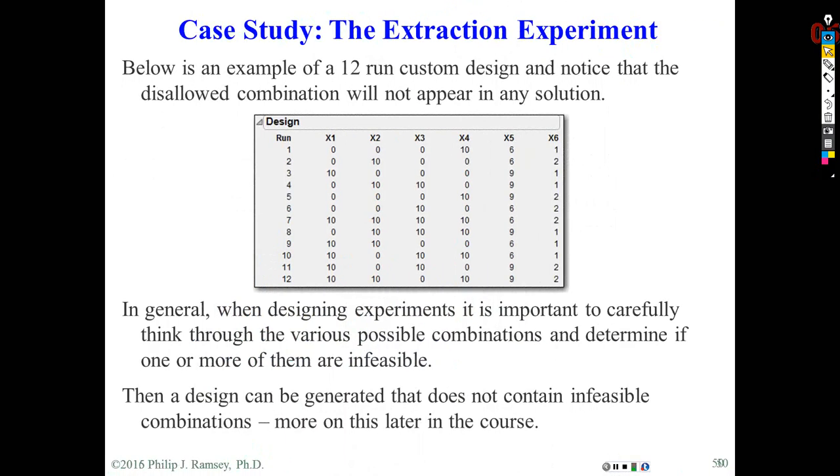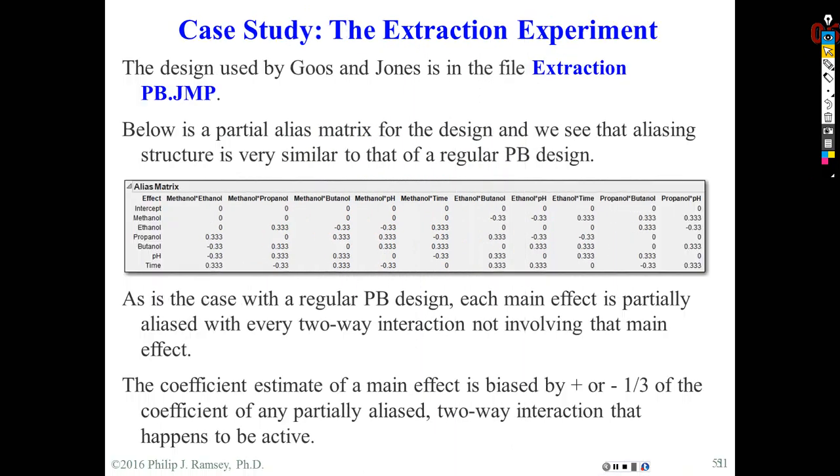So here is the design created by JMP. And later in the discussion of screening designs, I'll show how to create these designs in JMP. I won't do it at the moment, but this is the design that was actually selected. And this is essentially a 12-run Plackett-Burman.